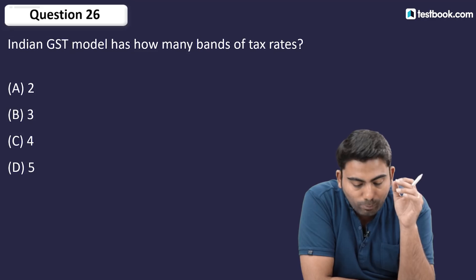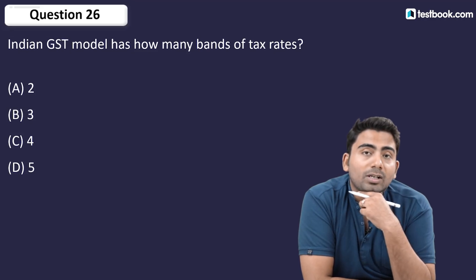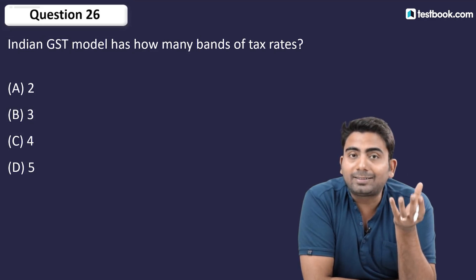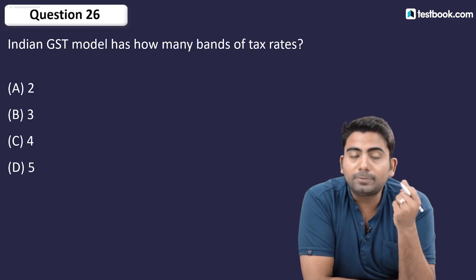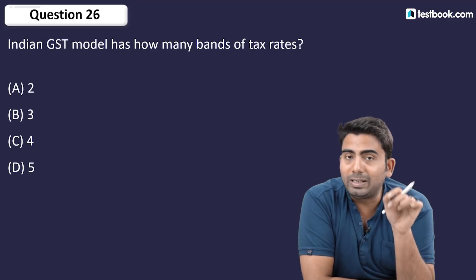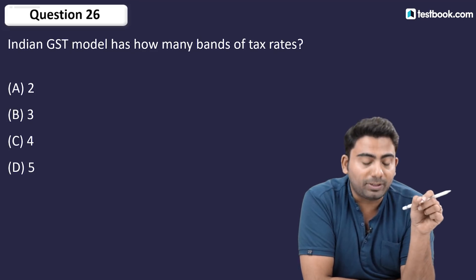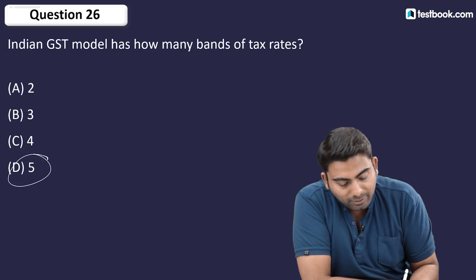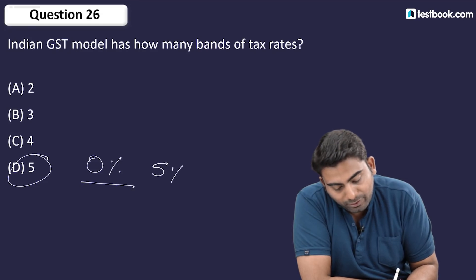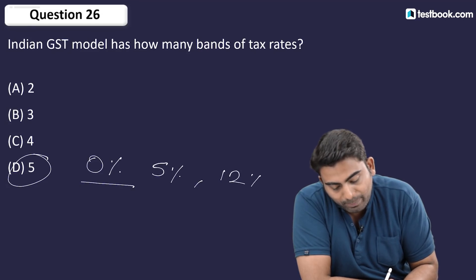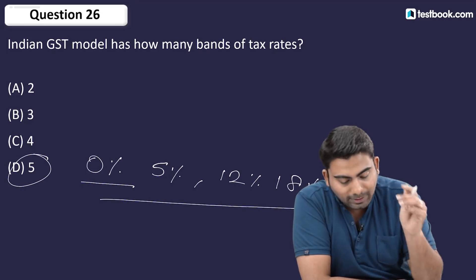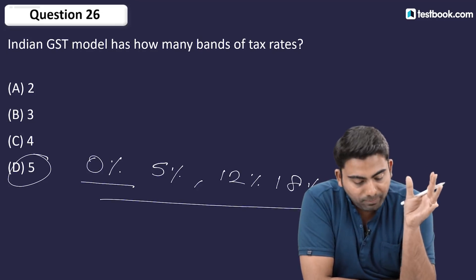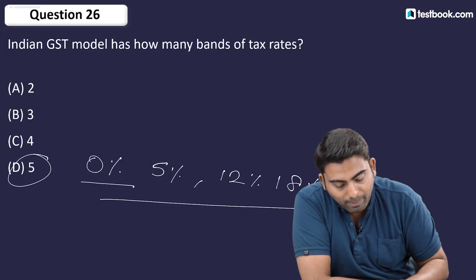Question number 26: India's GST model has how many bands of tax rate? The answer is 5 — the slabs are 0%, 5%, 12%, 18%, and 28%. You can also see these on the screen.